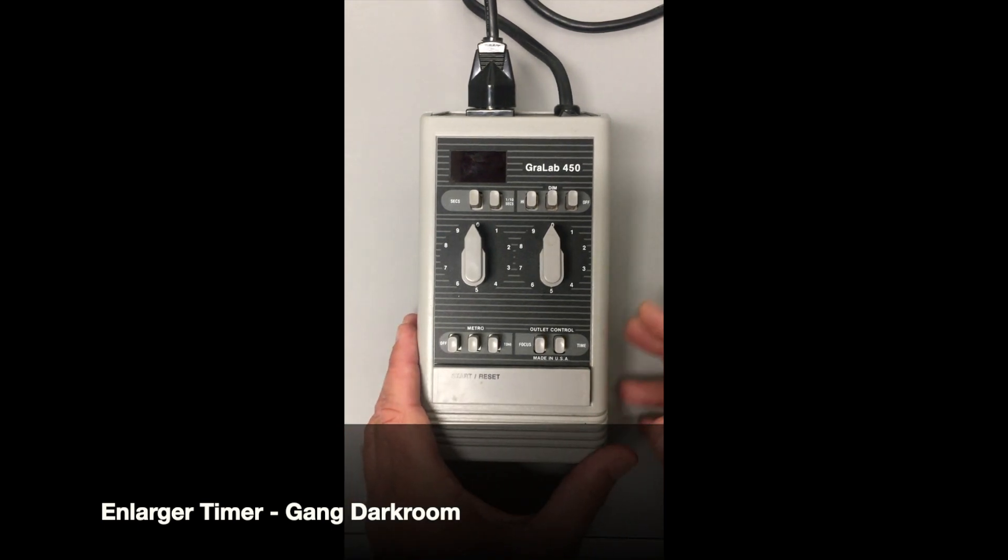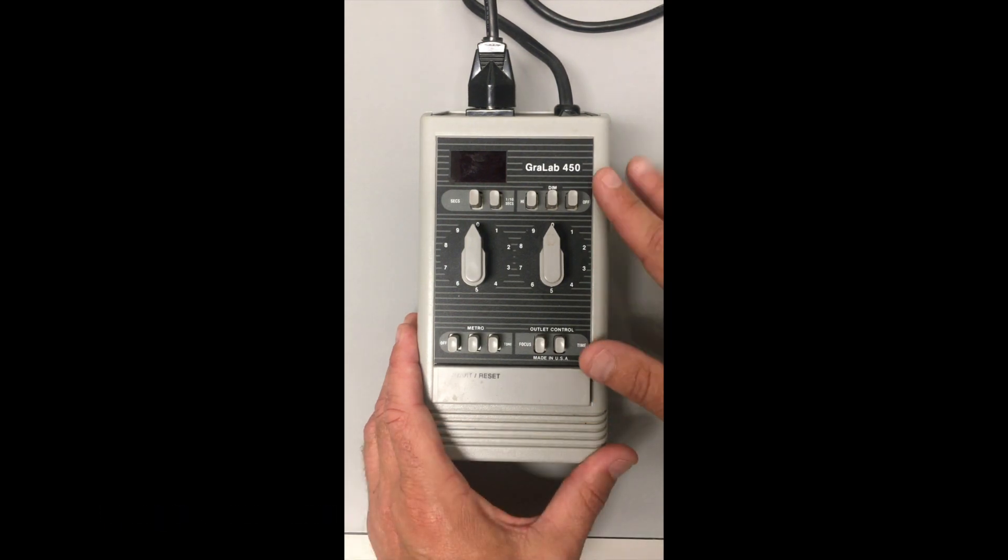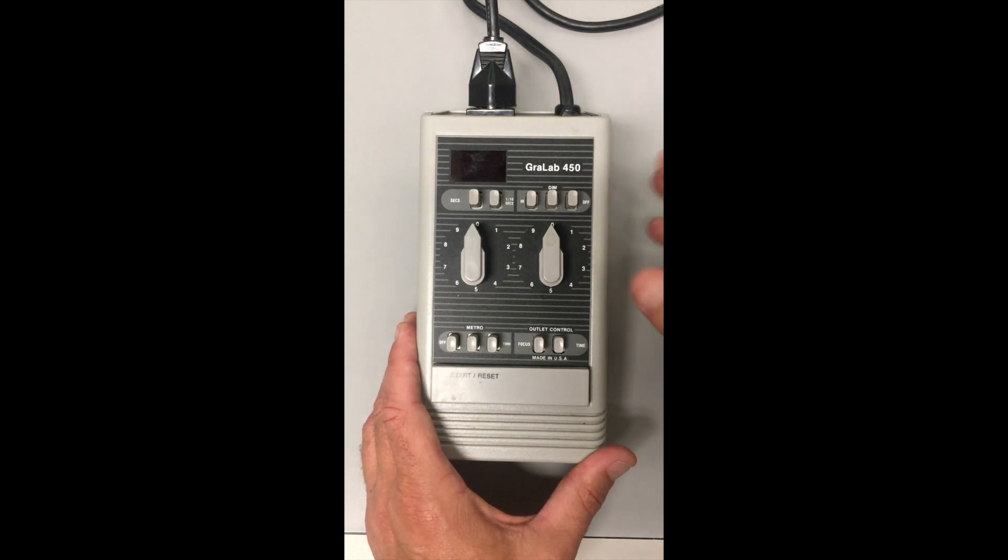This is going to be a short video on how to use the enlarger timers in the gang darkroom. This is one of two styles of enlarger timers in this darkroom - it's the Grab Lab 450, it's a digital model. The other ones we have are analog and I'll show you that in a different video.